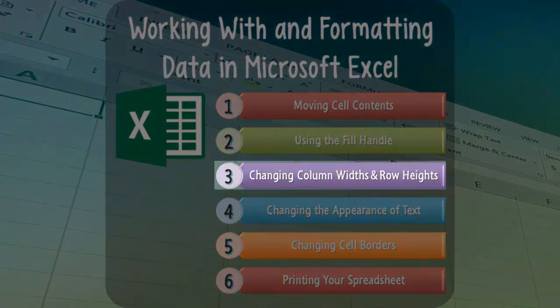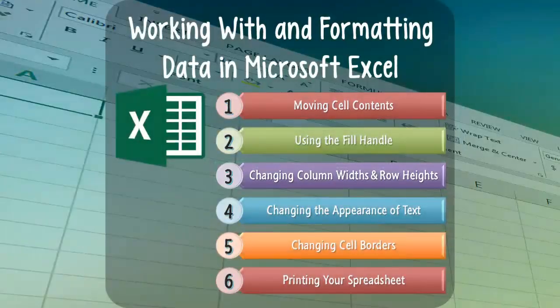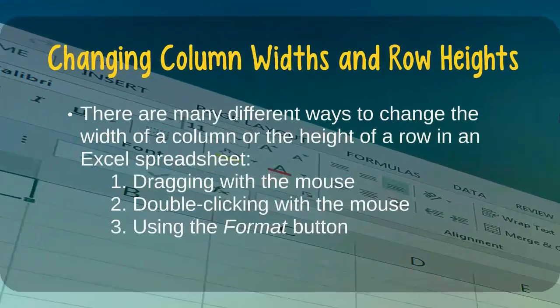Next, we'll learn about how to change column widths and row heights within an Excel spreadsheet. Generally speaking, there are three ways in which we can adjust the widths of columns or the heights of rows: dragging with the mouse, double-clicking with the mouse, or by using the format button.